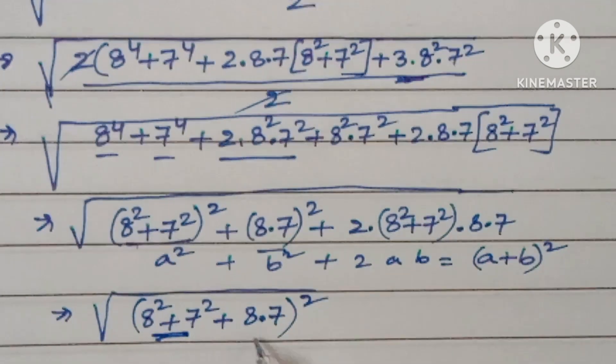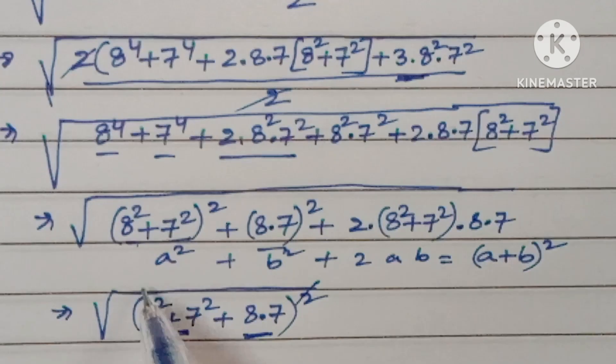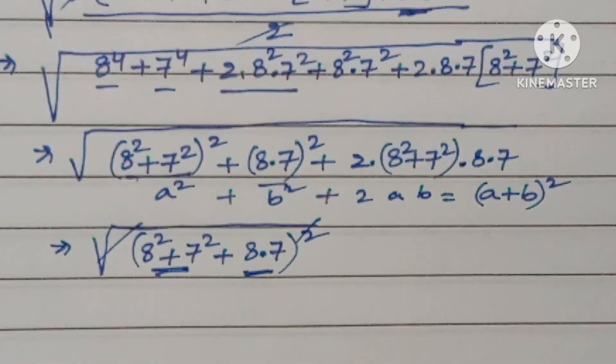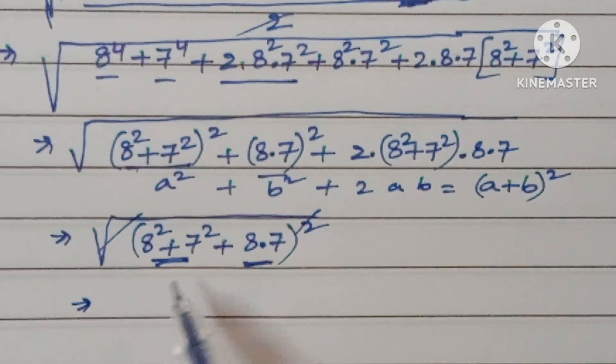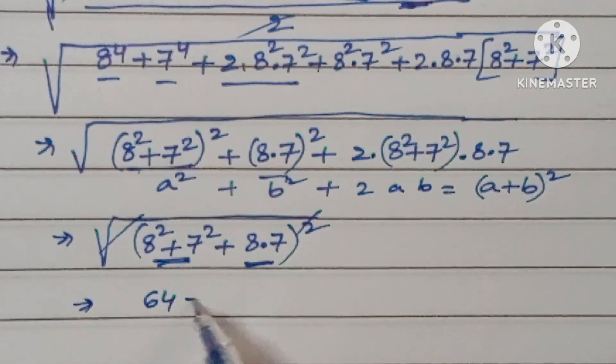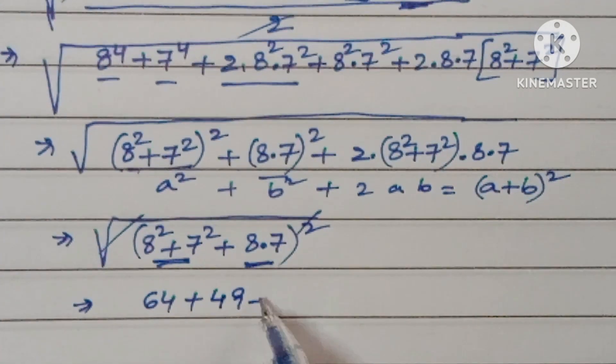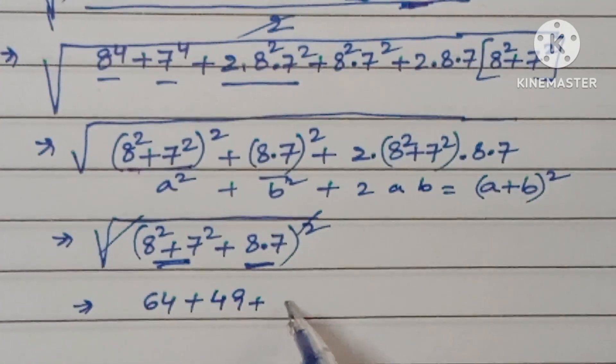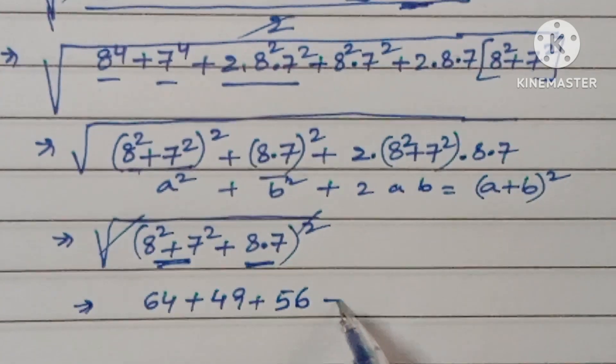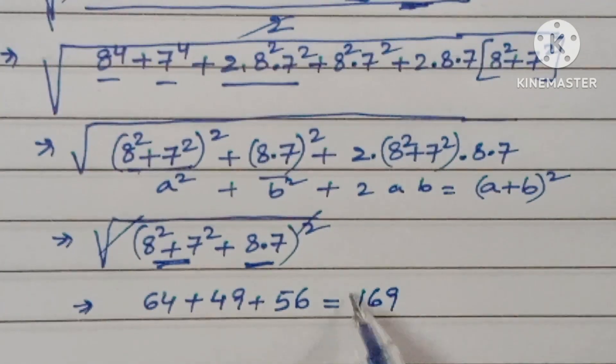So you will get 64 plus 49 plus 56, and the answer is 169.